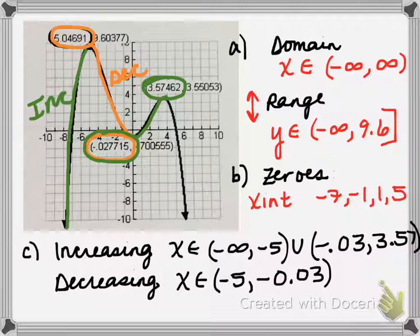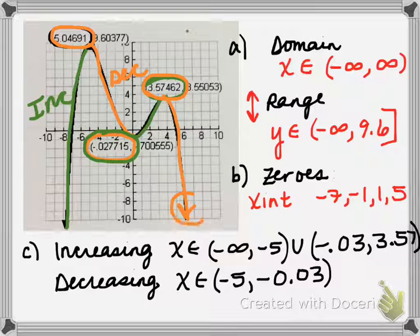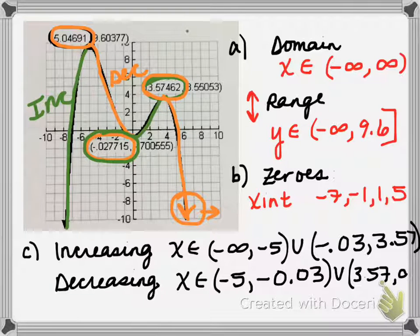And then lastly, we decrease one more time — the y values are getting smaller. We're decreasing from 3.57, and remember that arrow is pointing not just down but also to the right, so the graph is moving to the right as well. So we would decrease from 3.57 to positive infinity. Those are the intervals of increase and decrease for this particular function.